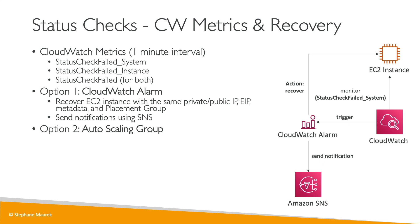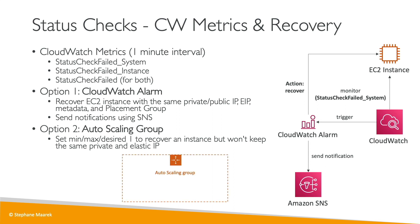Option two, which is a bit less conventional, is to use an Auto Scaling Group with a min, max, and desired of one, with a health check to check the status check of your EC2 instance. What will happen is that in case there is an issue with your EC2 instance, it will be terminated by your Auto Scaling Group, and because we have min, max, and desired set to one, a new EC2 instance will be launched within the same Auto Scaling Group. In this case you don't have the same EBS volumes, the same private IP, or the same Elastic IP, but at least your instance is back up and running, and if you automate things well you could regain its state.